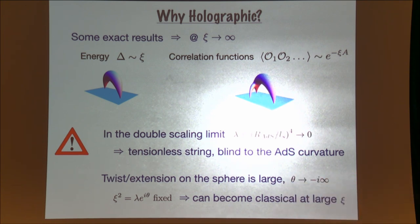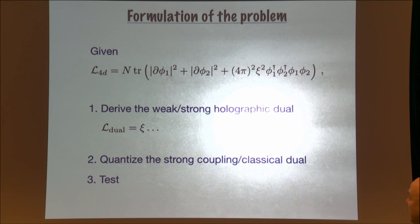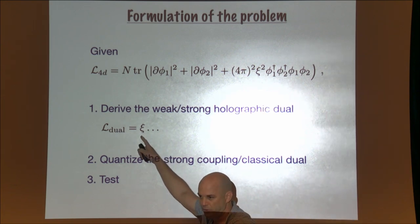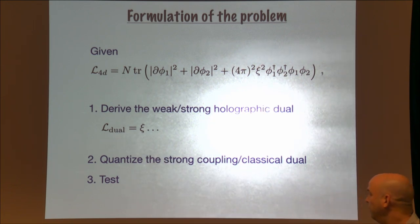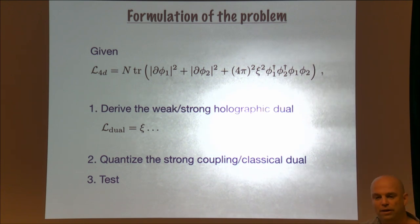Let me formulate the problem. Given this Lagrangian in the planar limit, derive a weak-strong duality — a dual description where the action starts with the square root of the 't Hooft coupling standing outside — that is dual to this model. The second step would be to take this classical description and quantize it, then compare the two at finite coupling.